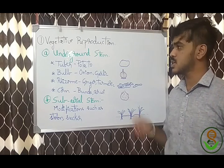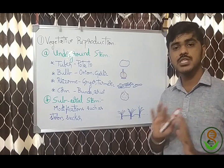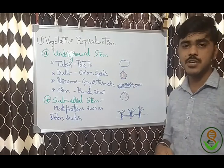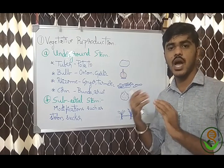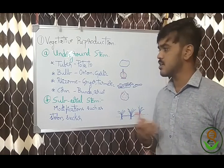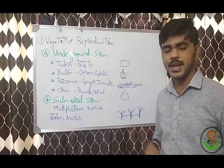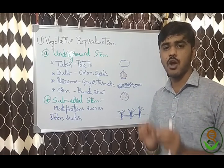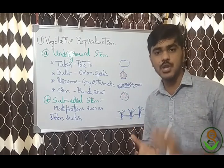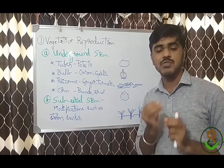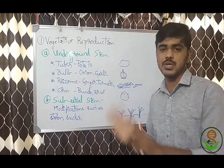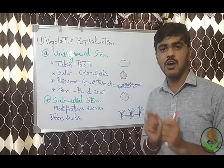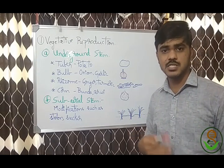Under asexual reproduction, vegetative reproduction takes place from the vegetative parts of the plant. In vegetative reproduction, many plant parts can reproduce into a new individual — for example, through underground stems. Plants like potato and onion grow below the soil, act as storage material, and contain buds or nodes that can develop into a new individual.